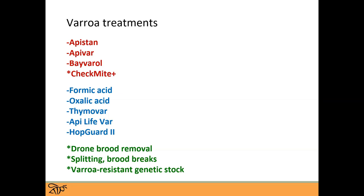Now let's talk about Varroa treatments. These are the treatments registered here. I've used colors to show the different classes. The red ones are synthetic acaricides — synthetic chemicals embedded usually on a plastic strip that goes into the hive. So Apistan, Apivar, and Baverol. Checkmite is also registered — I'll talk more about that — but it has an asterisk because we don't recommend using it even though it is registered.